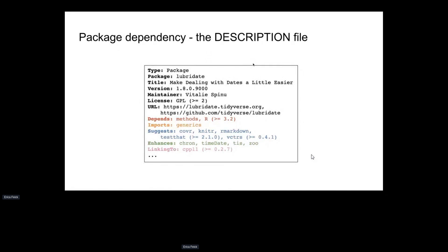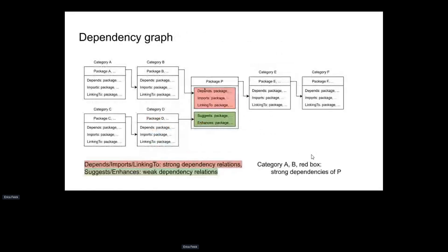Packages in Depends and Imports are called strong dependencies — if you install a package, all strong dependency packages must be installed as well. Packages in Suggests and Enhances are weak dependencies and are optionally required. For a package P, it has some strong and weak dependencies, and those parent packages also have their parent packages, which constructs a dependency graph. The total strong dependencies of P are all the packages that must be installed in advance for P to work.